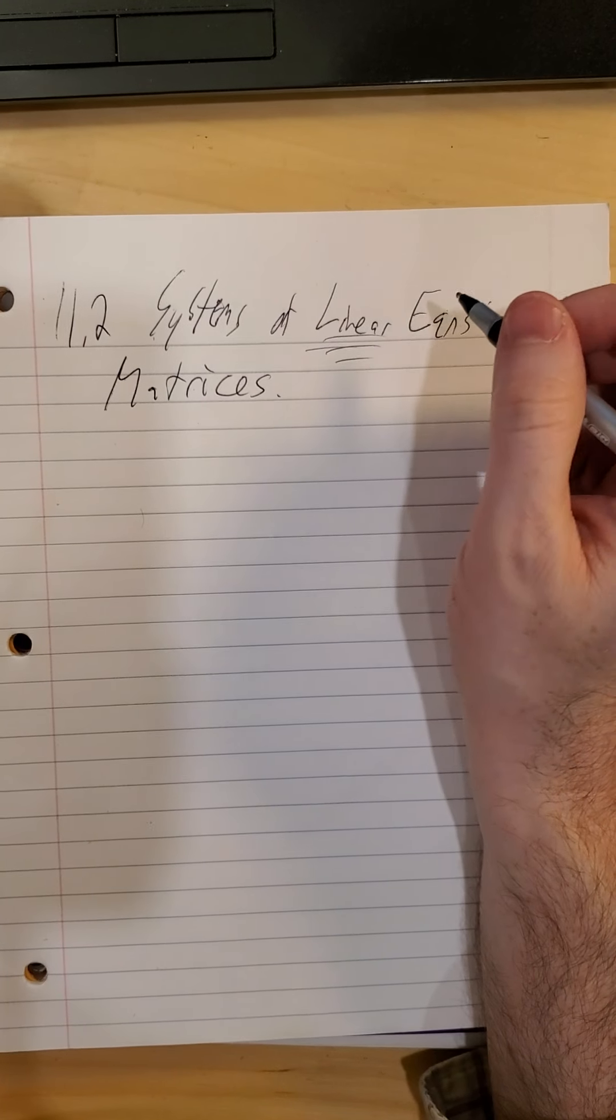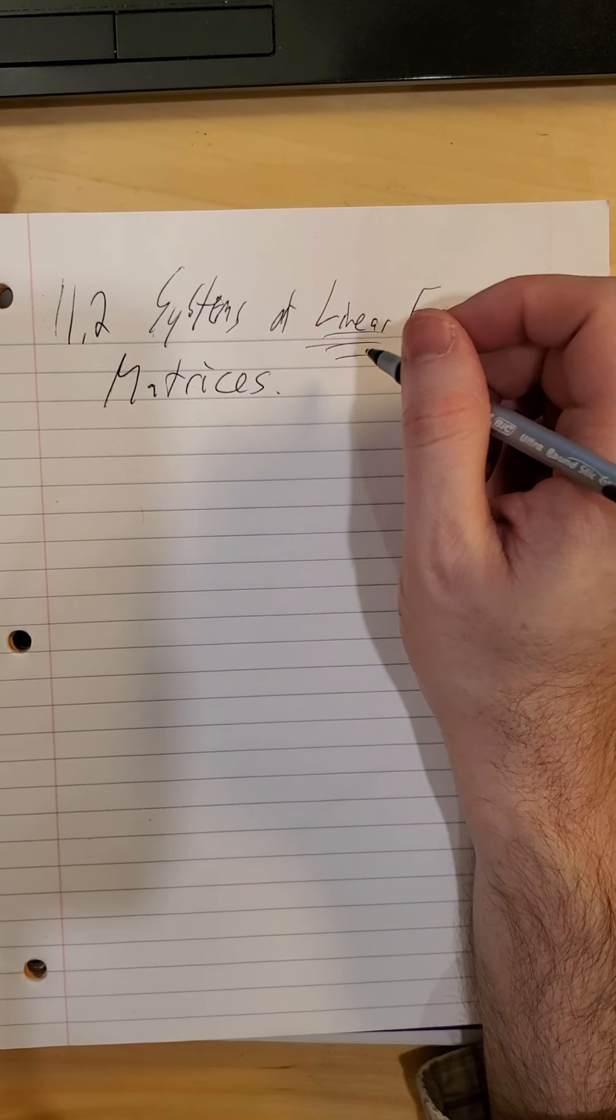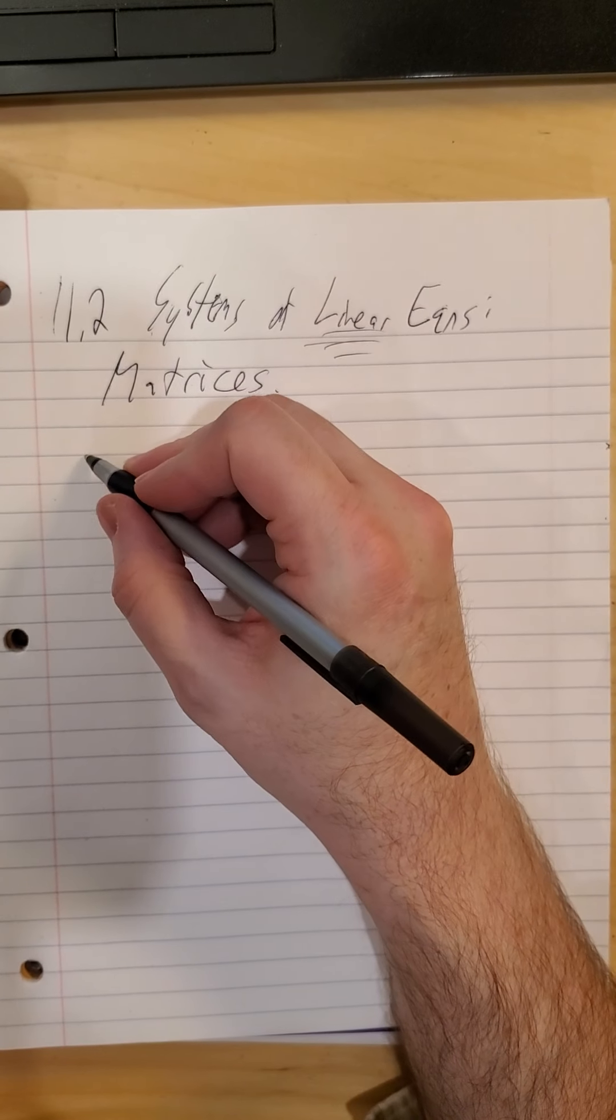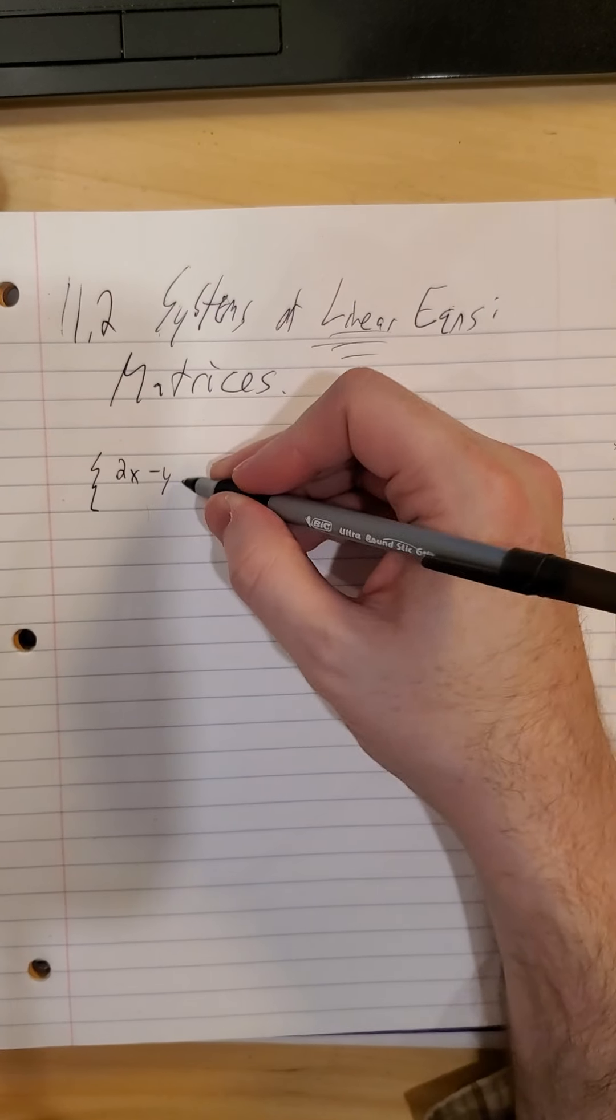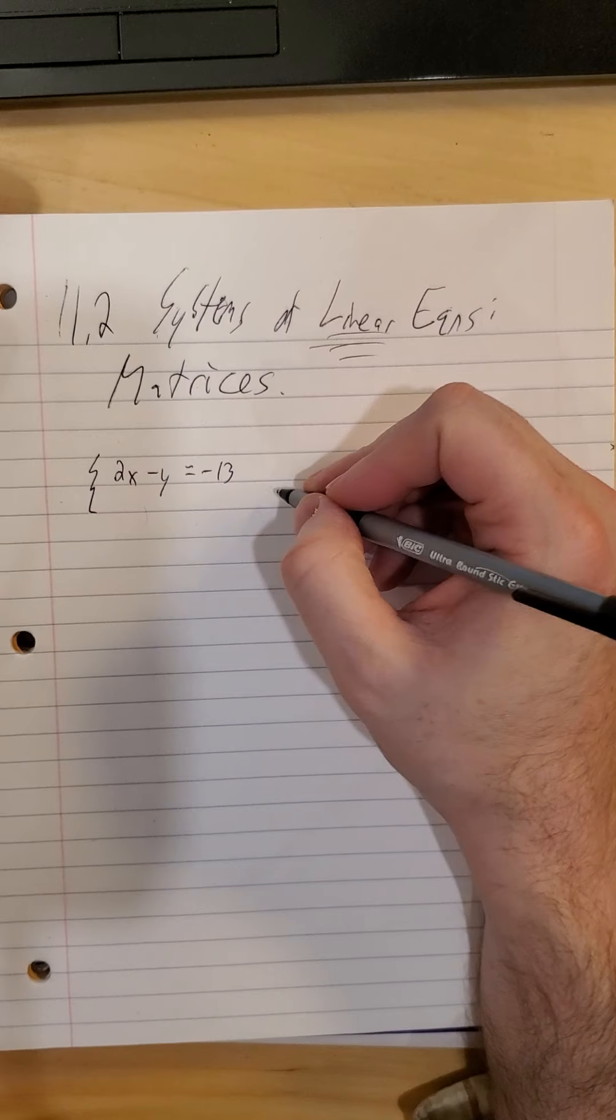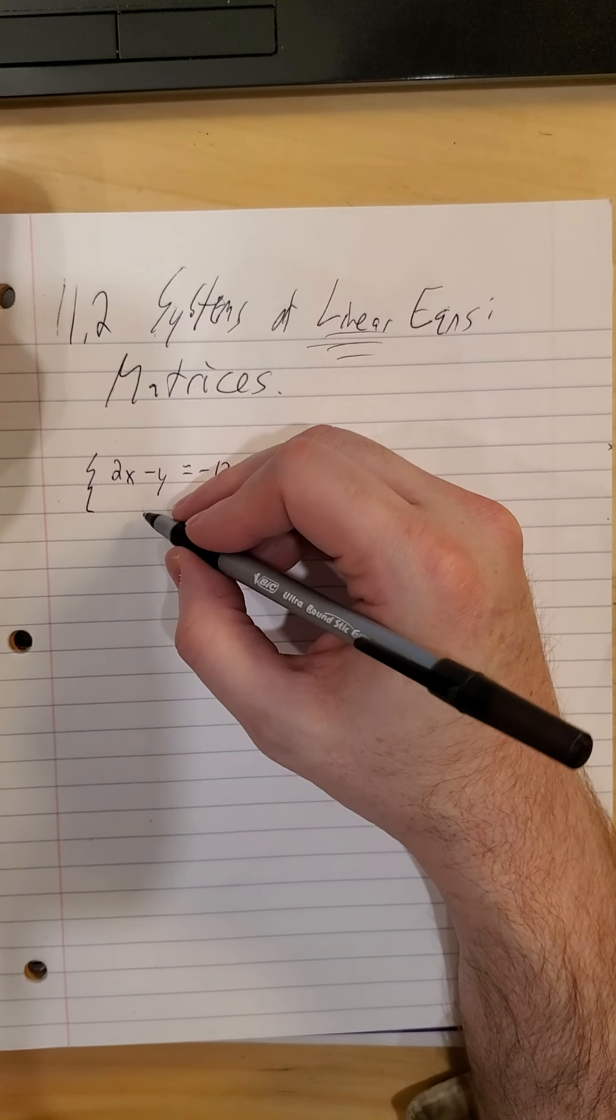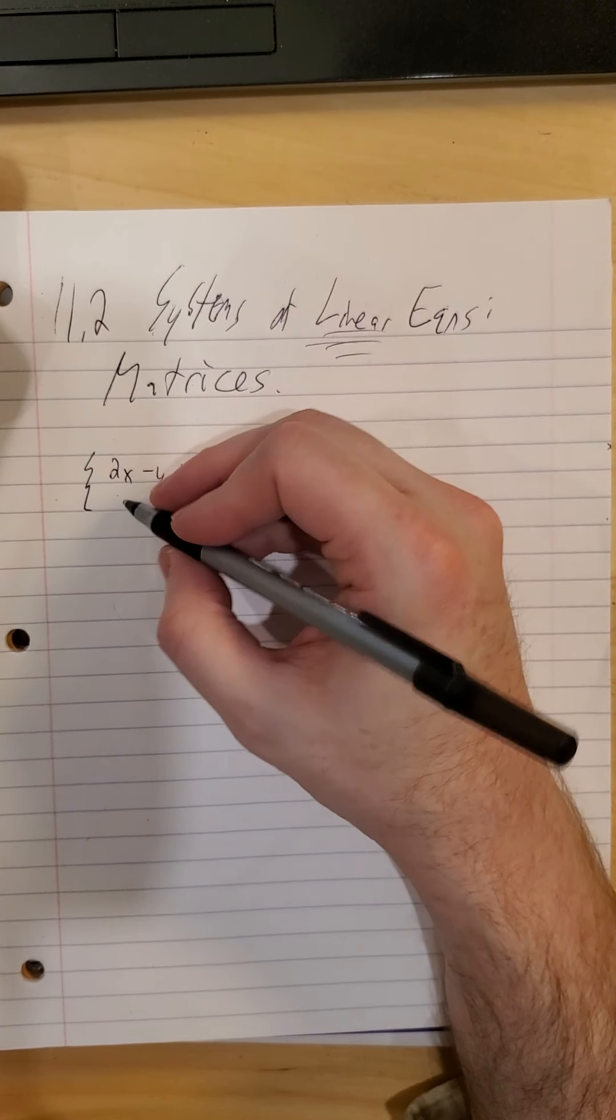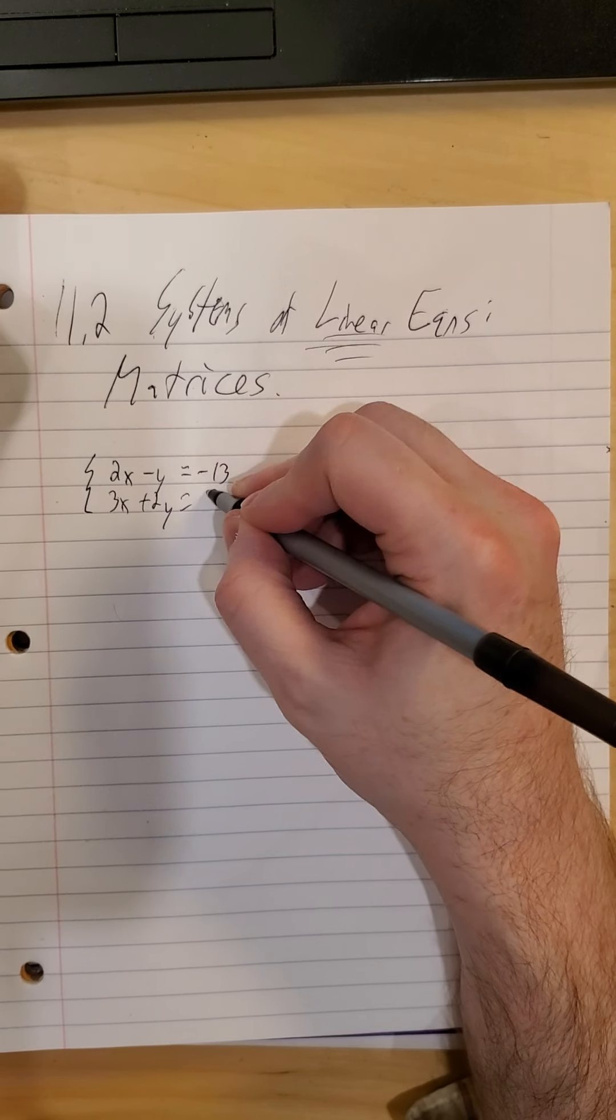So the key is for these matrices to work, they do have to be linear in nature. In other words, any variables we have have to be raised to the first power only. For example, something like 2x minus y is negative 13 is linear. x is raised to the first, y is raised to the first. And since it's a system, we would have at least one other equation, then we'll do 3x plus 2y is worth 5.